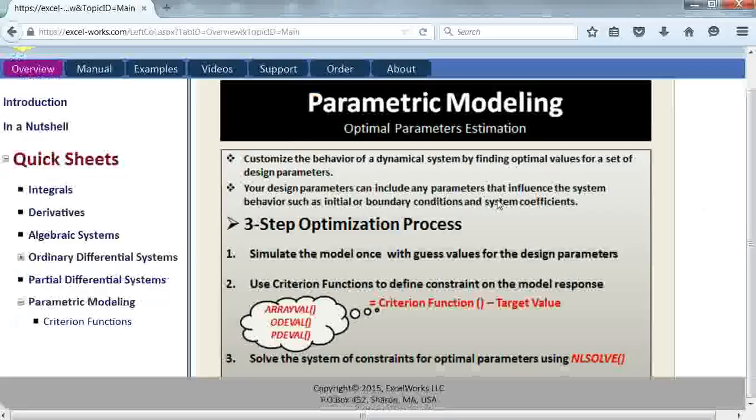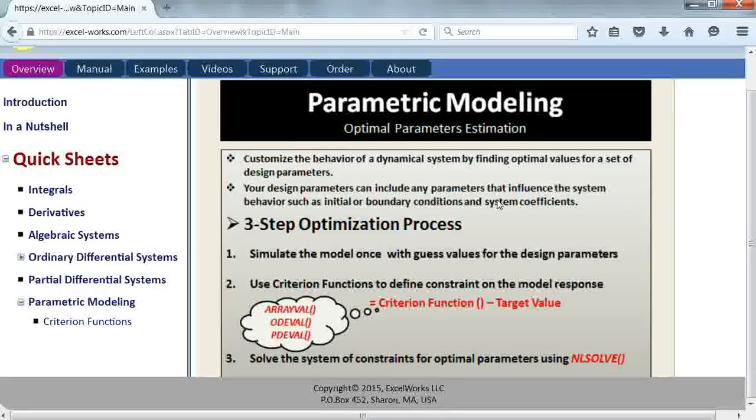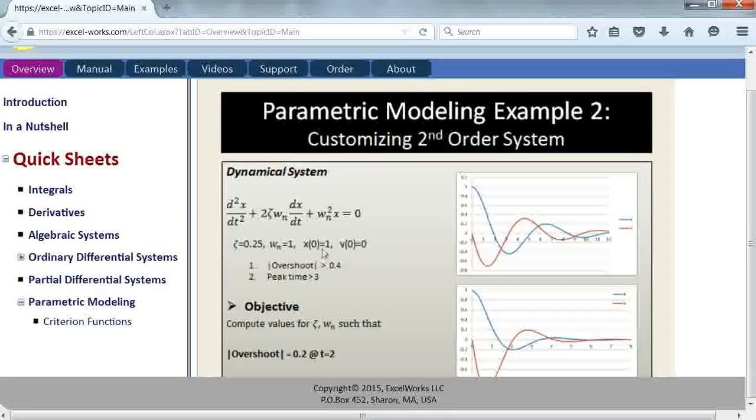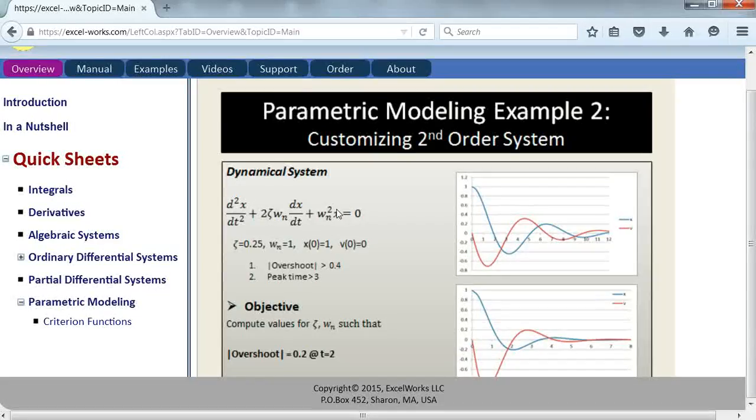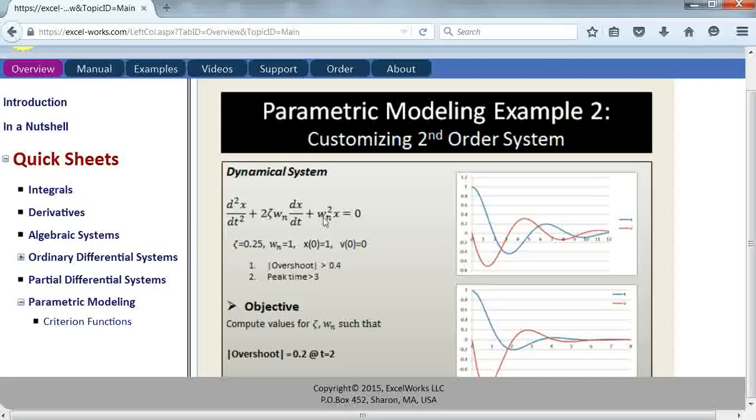To motivate the problem, let's look at the example we're going to use. Suppose we have a second order system, a mass damper system, and we've simulated the system for the following values of the parameters. Zeta is the damping ratio and omega n is the frequency. For these values we obtain the following response, which indicates the system is underdamped.